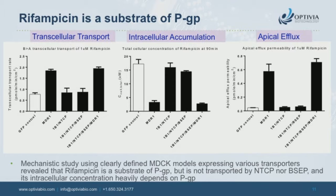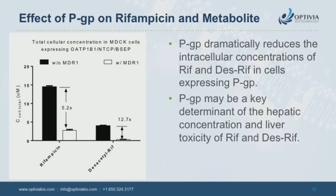Adding MDR1 encoding PGP to the model, we see much increased transcellular transport of rifampicin and much lower intracellular accumulation in the presence of MDR1. So PGP is effectively protecting the hepatocyte from the effects of rifampicin. The same experiment with the metabolite desacetyl rifampicin shows about a five-fold decrease in rifampicin concentration and about a 12-fold decrease in metabolite concentration in the presence of PGP. This suggests PGP may be a key determinant of the hepatic concentration and thus the toxicity of rifampicin.